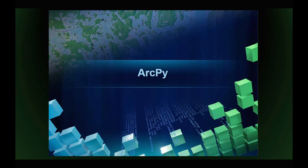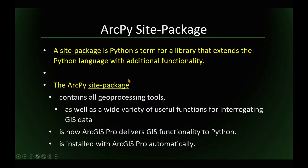Let's finally start some coding that does some actual geoprocessing. For that we need ArcPy. ArcPy is a so-called site package, which means it's a library that extends the Python language with additional functionality. This ArcPy site package contains all roughly 800 plus geoprocessing tools, and a wide variety of additional functions that are just good coding functions to interrogate GIS data.